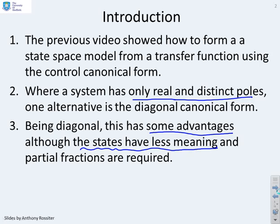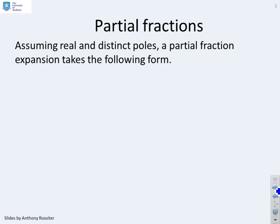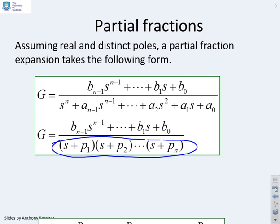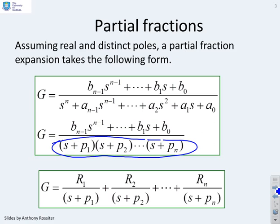Also, you'll need to use partial fractions. Assuming real and distinct poles, a partial fraction expansion takes the following form. The first thing you do is you factorize the denominator, so you write it as a product of factors. Once you've done that, you find the residue for each factor.